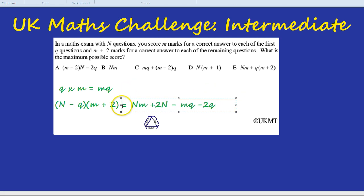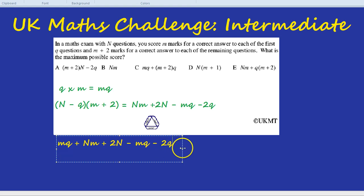Finally our total marks is going to be our marks from the first Q questions plus our marks from the remaining questions. So we need to add these two together. So we're going to do all in one go. MQ add all of this number. So NM and 2N take away MQ and take away 2Q.